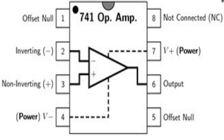Pin diagram of the UA741: pins 1 and 5 are the offset null, pin 8 is not connected, pin 2 is inverting, pin 3 is non-inverting, pin 4 is VEE, pin 6 is the output, and pin 7 is Vcc.